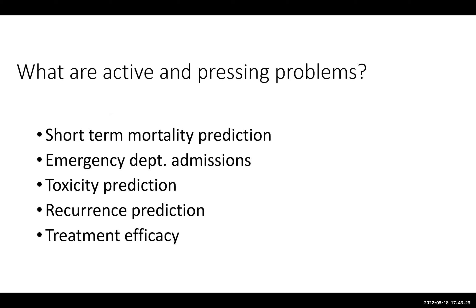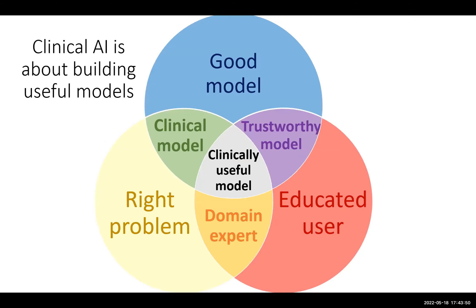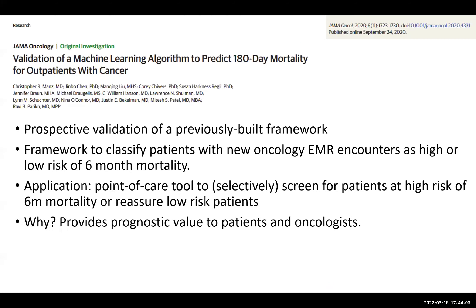Some of the active and pressing problems in clinical AI include short-term mortality prediction and predicting emergency department admissions. The framework I think of for clinical AI requires an intersection of a good model, the right problem, and then educated users. A prospective trial out of Penn validated a previously built framework where they wanted to predict patients as having high or low risk of six-month mortality, with a goal of creating a point-of-care tool to selectively screen for patients at high risk of mortality or to reassure low-risk patients — providing prognostic value to patients and oncologists.